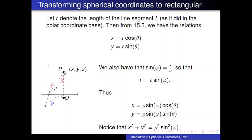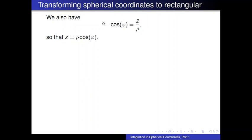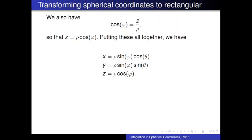Going back to the right triangle, cosine of φ equals z divided by ρ — because the vertical leg of that triangle has length z. Solving for z gives z = ρ·cos(φ). Putting all three relations together: x = ρ·sin(φ)·cos(θ), y = ρ·sin(φ)·sin(θ), and z = ρ·cos(φ). These are our spherical-to-rectangular coordinate transformation formulas.